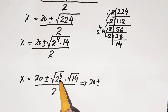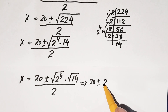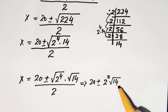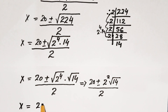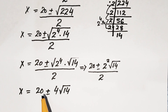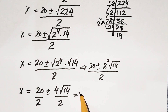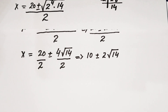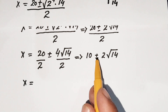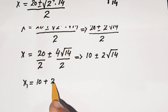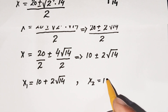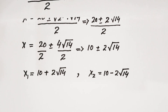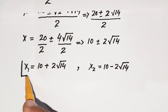Taking the square root, 2 to the power 4 gives 2 squared which is 4, so the square root of 224 is 4 times the square root of 14. Dividing through by 2, we get x equals 10 plus or minus 2 times the square root of 14. So x1 equals 10 plus 2 times square root of 14, and x2 equals 10 minus 2 times square root of 14.